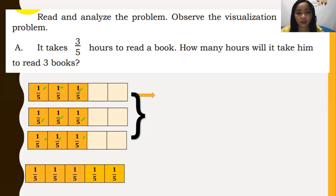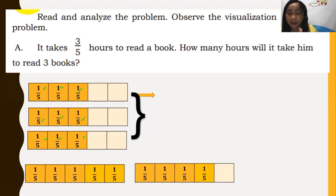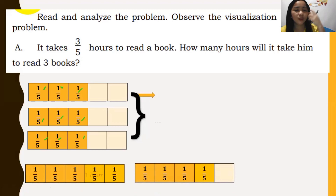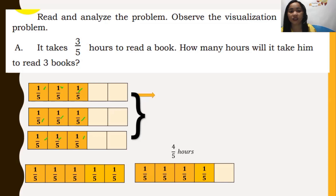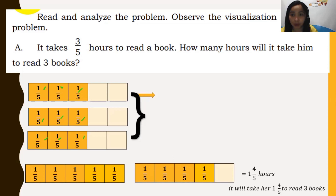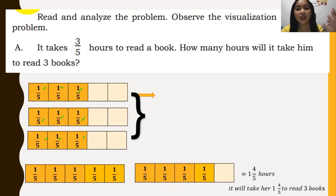We have five shaded portions that represent one whole, and we still have four more shaded portions. This one represents one hour because you completed five parts, and this one represents the excess — which is four-fifths of an hour. Therefore, it will take one and four-fifths hours to read three books. That's how we visualize multiplication of a whole number by a fraction.